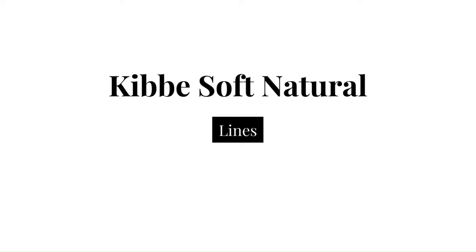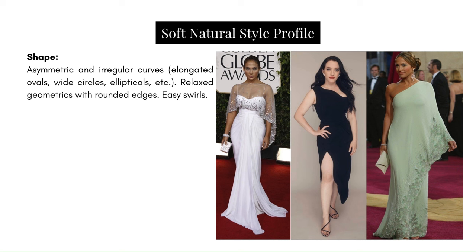Now let's discuss Kibbe's soft natural lines. Shape: asymmetric and irregular curves — elongated ovals, wide circles, ellipticals. Think of relaxed geometrics with rounded edges and easy swirls. In these images, there's a softness and rounded quality to all the shapes. The lines are long but gently rounded — no sharpness. There's draping that creates a relaxed quality within the fabric, blending the broad and blunt quality of the natural with the softness of a romantic.